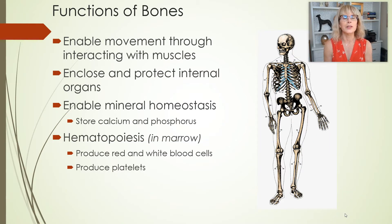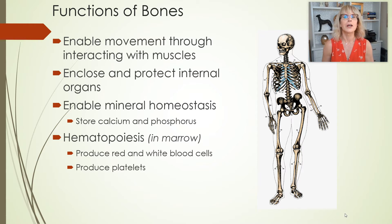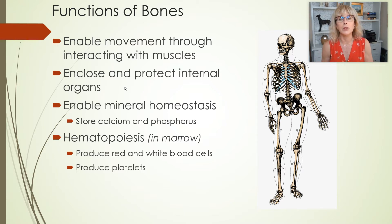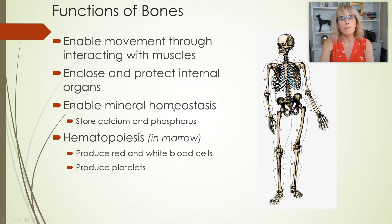We've been talking about the skeletal system and discussing the functions of bones. Bones allow us to walk around, give the body structure, and interact with muscles to allow us to move and lift things. Bones also protect internal organs — the skull protects the brain, and the ribs and sternum protect the heart and lungs.